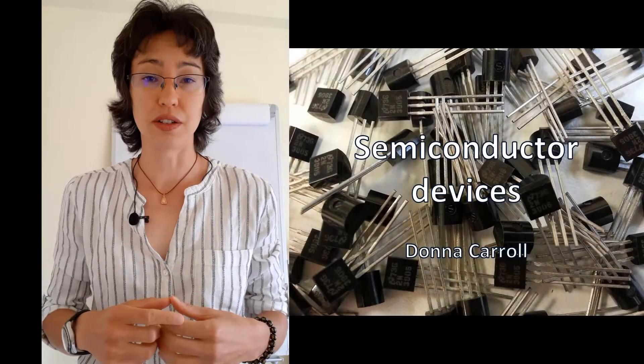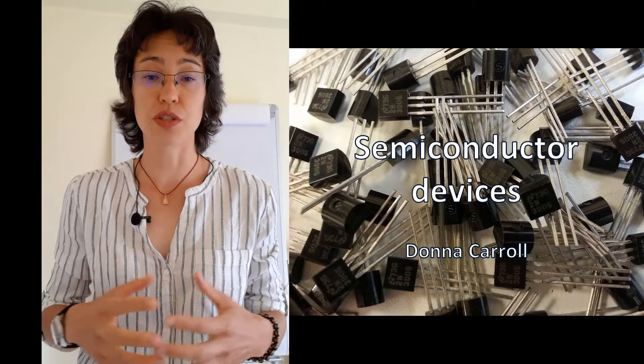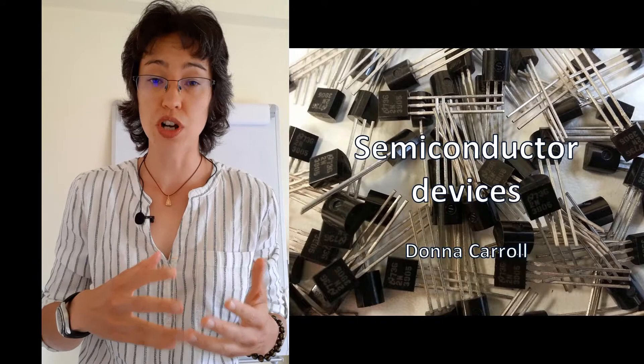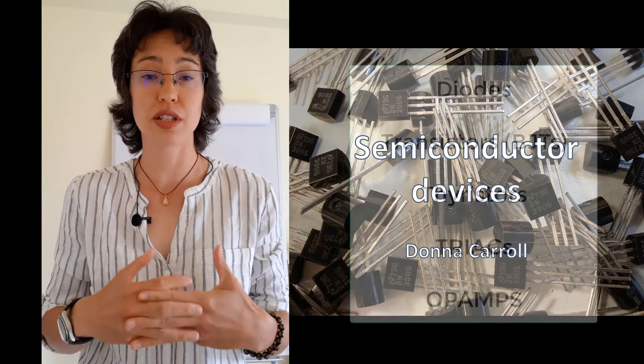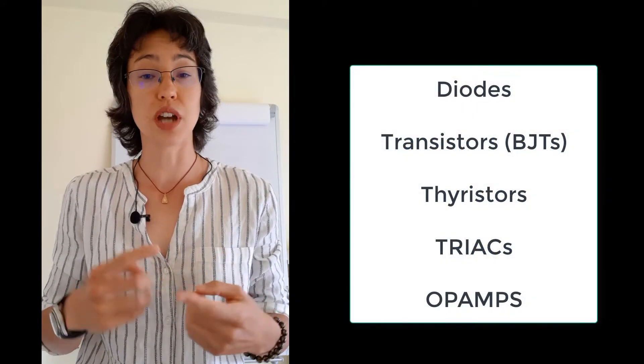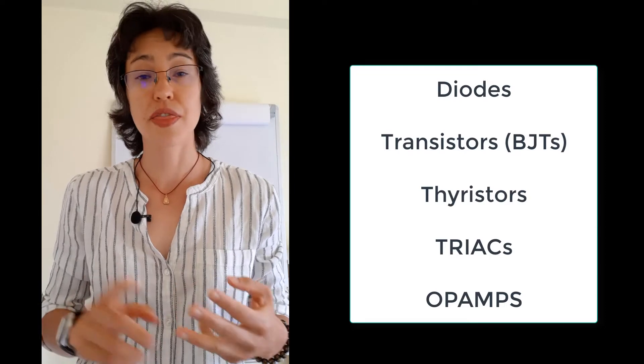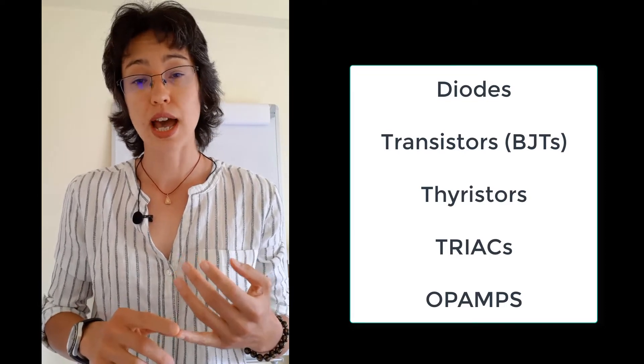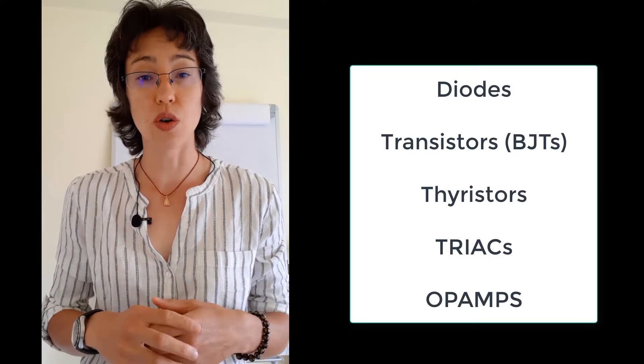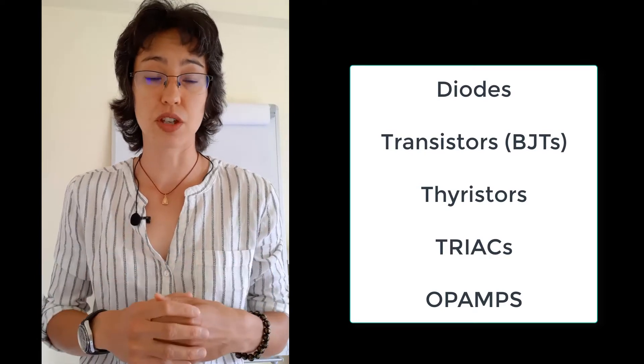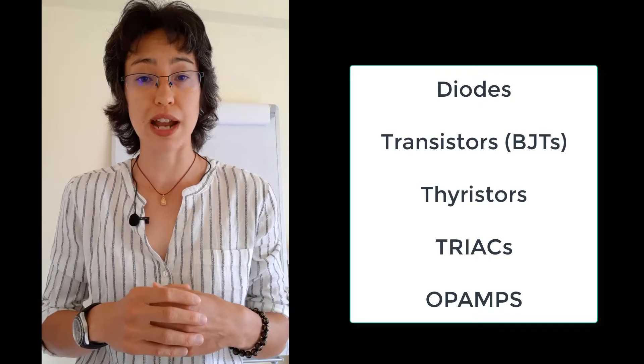Last time I gave an introduction to semiconductors and we ended by looking at a very oversimplified view of how an LED works. Today I want to go into a lot more detail on semiconductor devices. I'll cover some of the most common ones, how they work and how they can be applied in various circuits. I'm going to cover diodes, transistors, thyristors and triacs, and I'm going to do a separate video on op-amps because that's something you're using quite a lot in the practical.